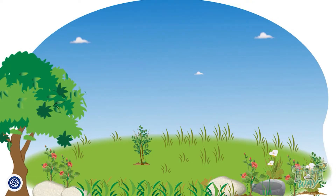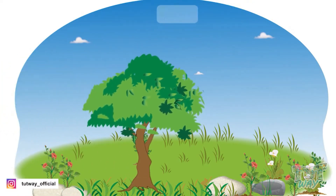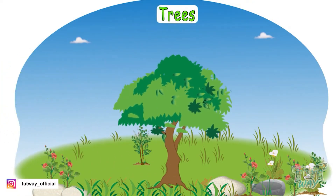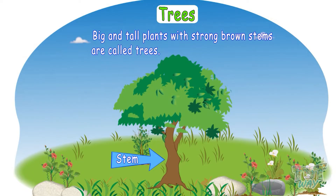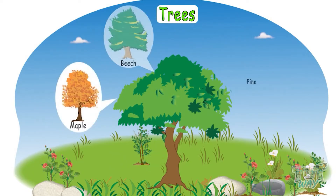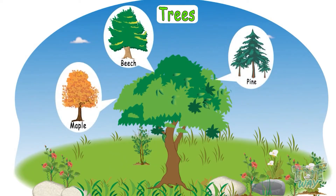Trees: big and tall plants with strong brown stems are called trees. These are some examples of trees.